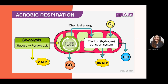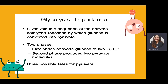Glycolysis is a sequence of ten enzyme-catalyzed reactions by which glucose is converted into pyruvate. Pyruvate has various chemical terminologies — it can be called pyruvic acid, pyruvate, or G3P (glyceraldehyde-3-phosphate). It is called G3P because it has three carbons and one phosphate. The second phase produces two pyruvate molecules.